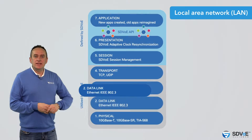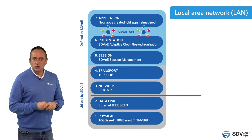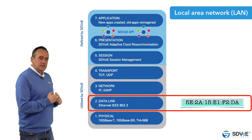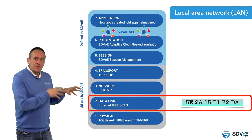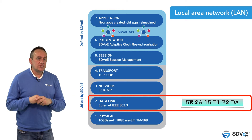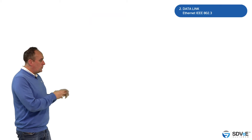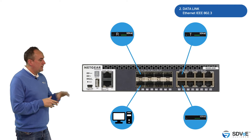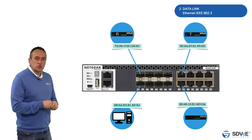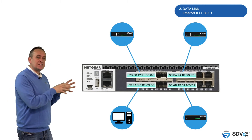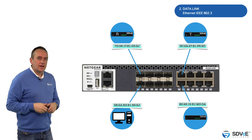It's called data link because at this layer host devices are linked together to form a single network, often referred to as a local area network or LAN. As we learned in the Ethernet Explained course, the host addresses used at layer 2 are the MAC addresses, and because every MAC address is unique, theoretically every host could communicate on the same LAN. This is exactly what happens when we connect hosts to a network switch. The switch will use MAC addresses to determine which host or group of hosts it needs to send data packets to, and this is a network at layer 2.